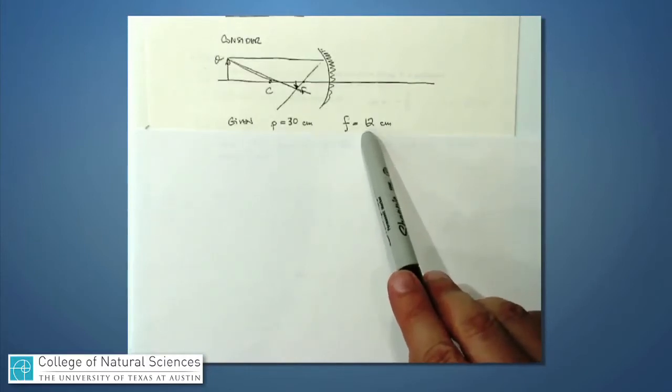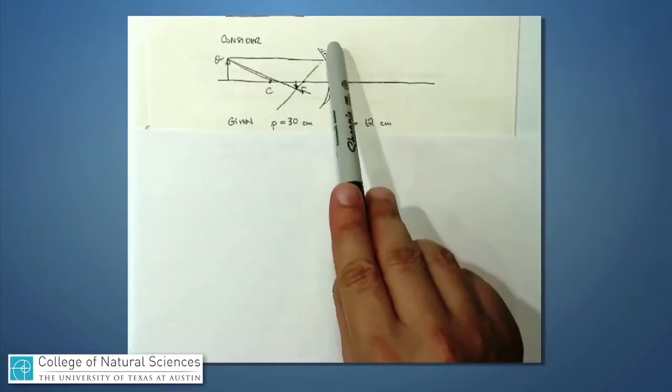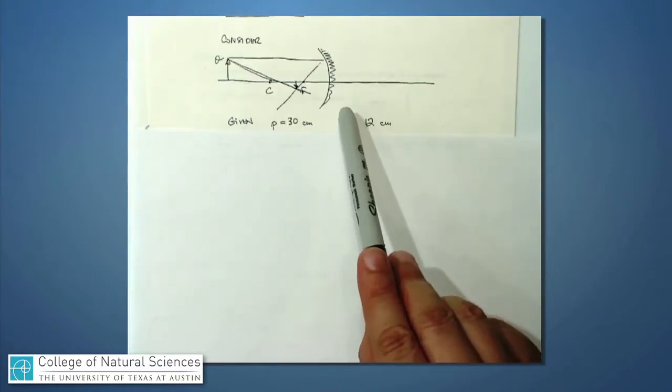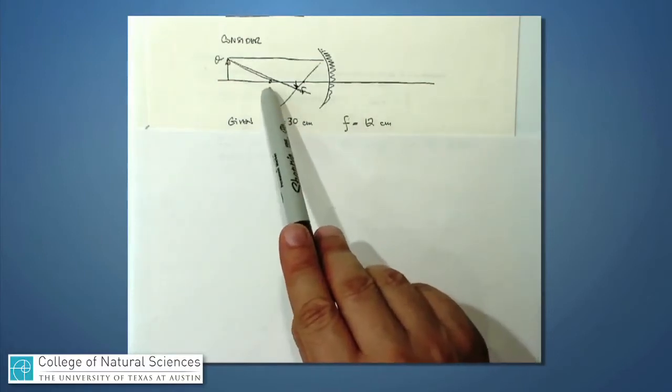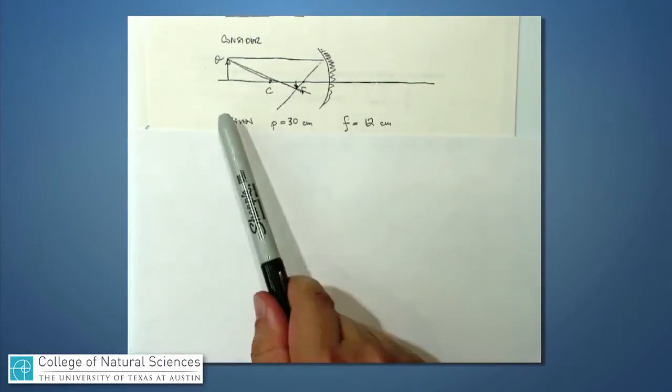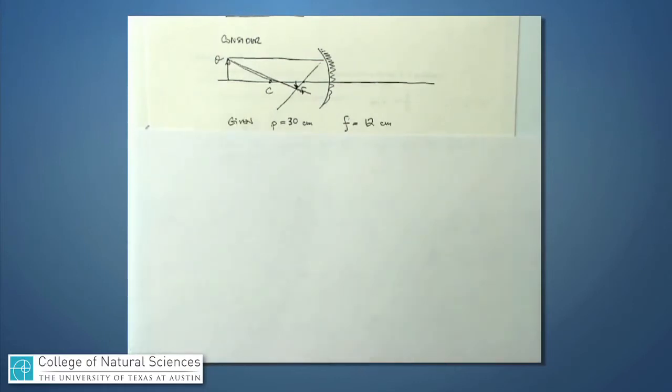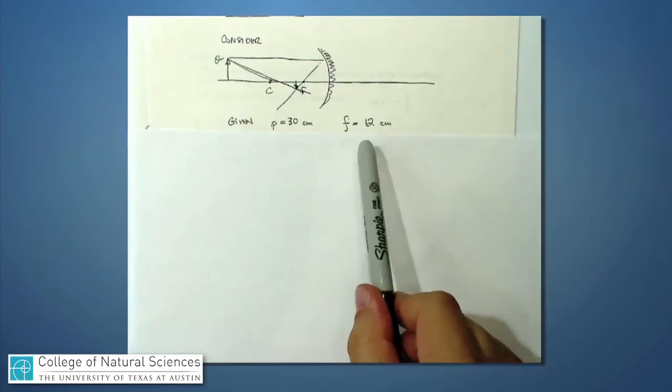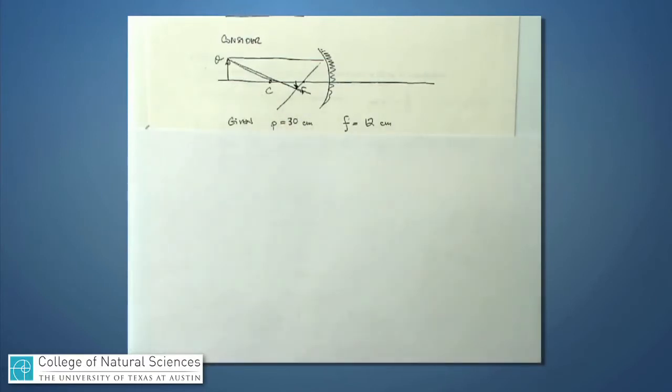Because it's a concave mirror, the center of curvature is over on this side, and that means the radius of curvature is positive, and the focal length f is going to be positive. Notice that the distance to the object is quite a bit further than either the center of curvature or the focal length. The center of curvature is going to be double that focal length of 24 centimeters, and maybe I haven't quite drawn this to scale yet, but you get the idea.